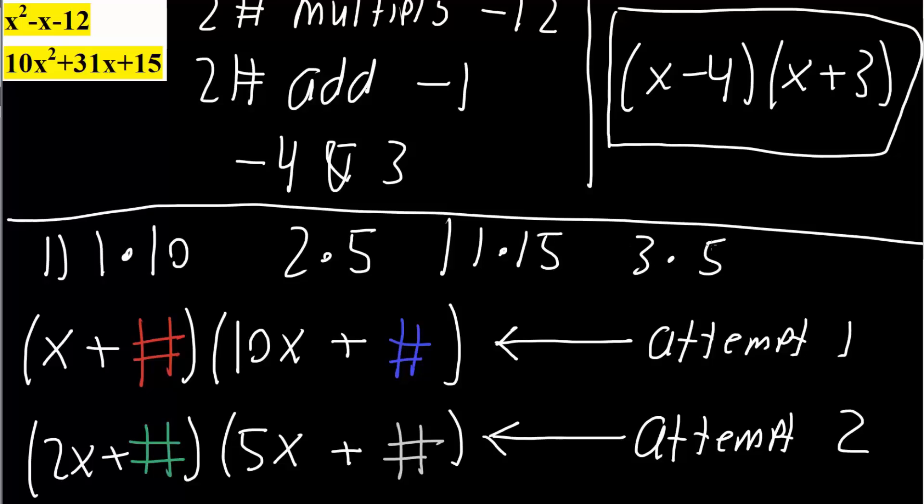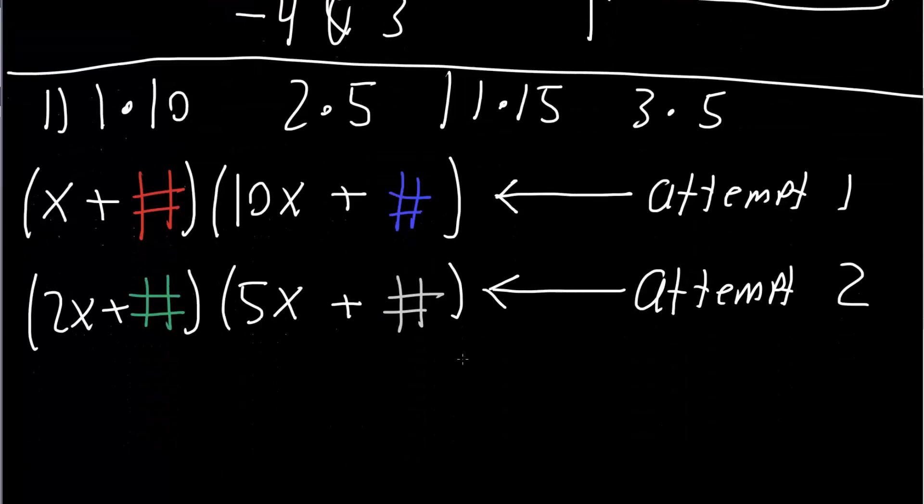And so what we're going to do essentially is plug in 1, 15, 15, 1, also 3, 5, 5, 3 for both of these problems. And what we want to do is get 31x. So which method would allow us to get 31x? And so with practice, this would become more obvious, but it will be 2x plus 5 times 5x plus 3.